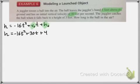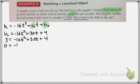So it says the juggler catches the ball when it falls back to a height of three feet. How long is the ball in the air? So they're asking us to find the t value when h is three. So we're going to substitute three right here. And then we need to solve for t. Well, this is a quadratic equation, so we know a lot of different methods. And in this case, let's start by setting our equation equal to zero and taking a look.